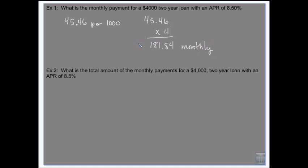Now to find the total amount of monthly payments, we're going to take that $181.84, and it's a two-year loan, so it's 24 months. We're going to multiply it because it's the total amount that we paid.